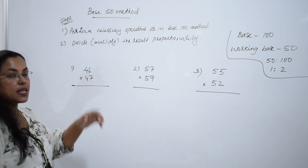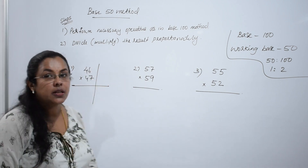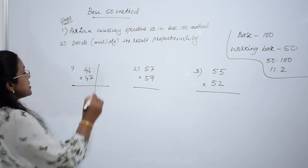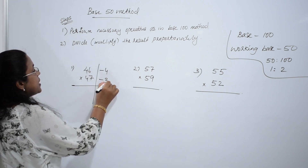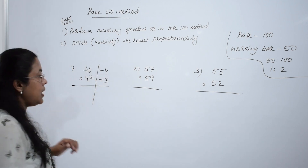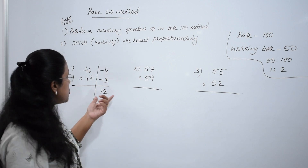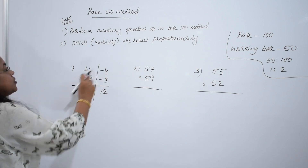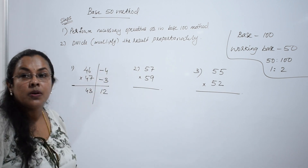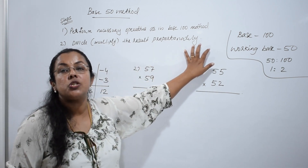First question: multiply 46 and 47. Proceed as in the base 100 method — write the deviations from 50 first. 46 is 4 less than 50, and 47 is 3 less than 50. Multiply vertically: 4 threes are 12. Minus 4 times minus 3 — minus times minus is plus — so plus 12. Now do the diagonal operation: 47 minus 4 is 43.